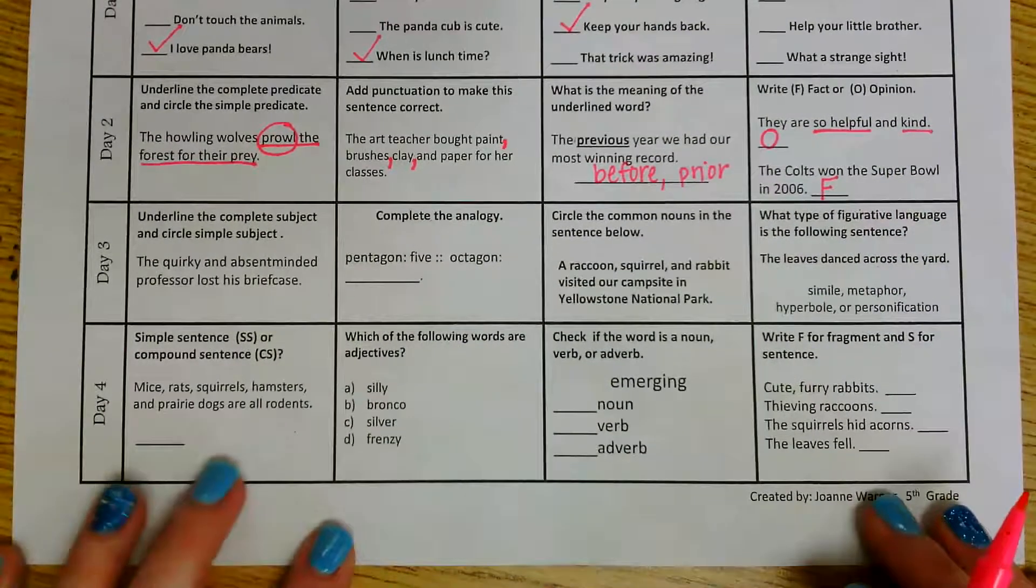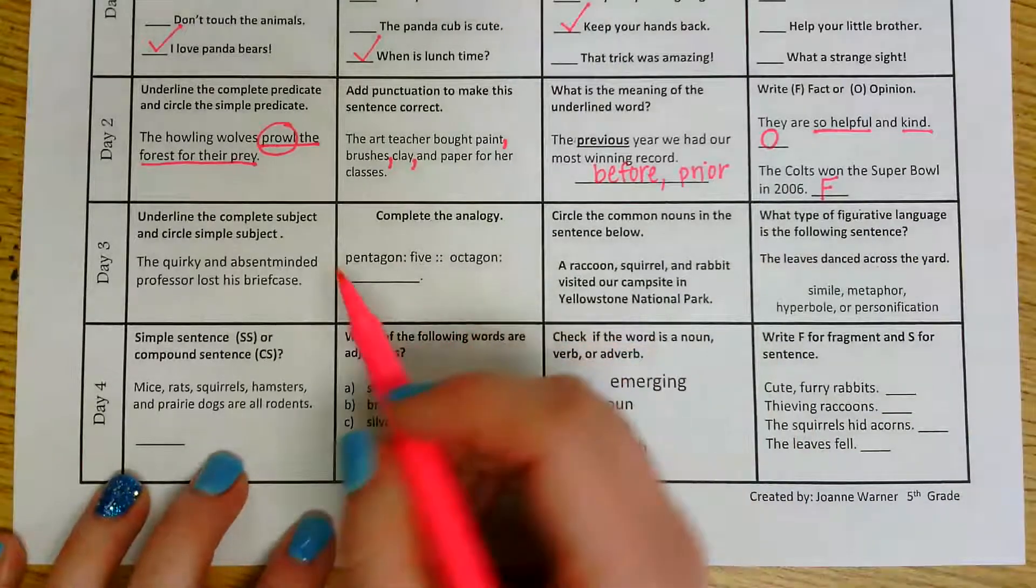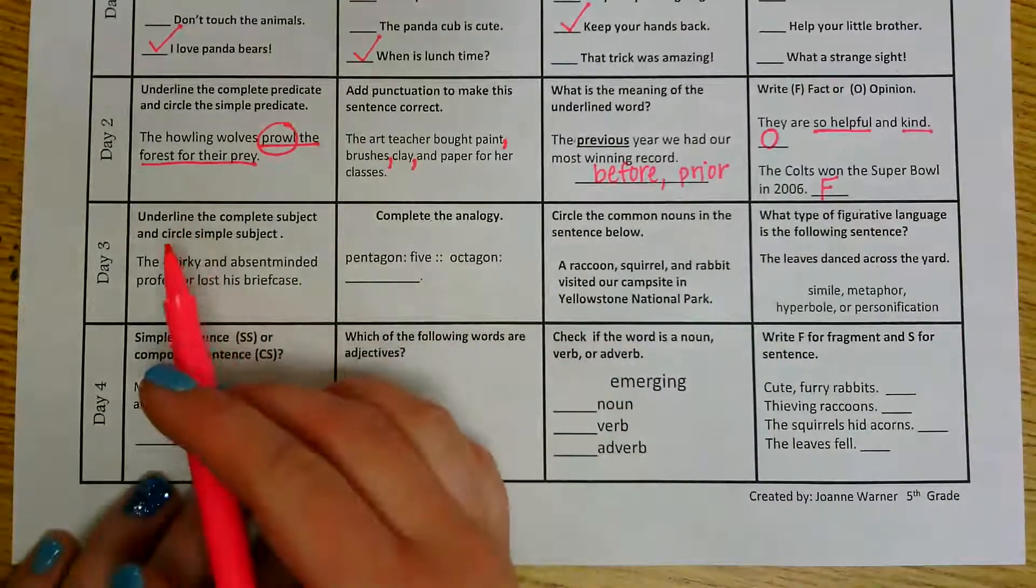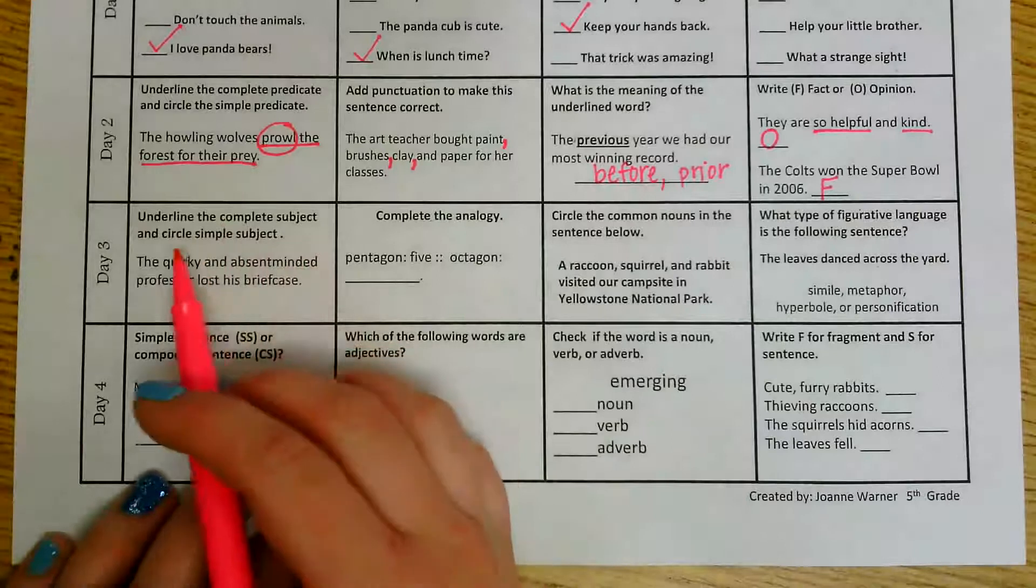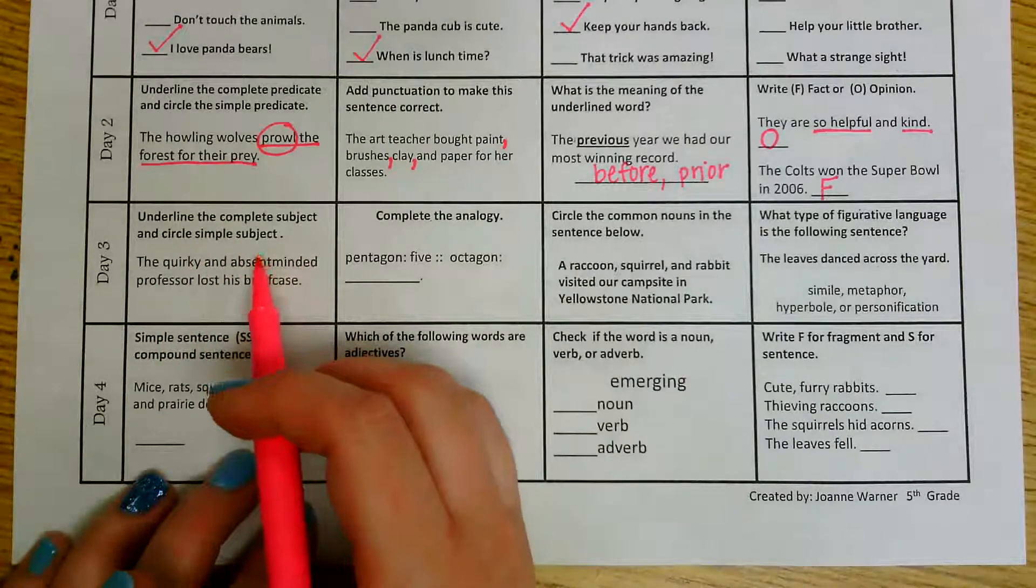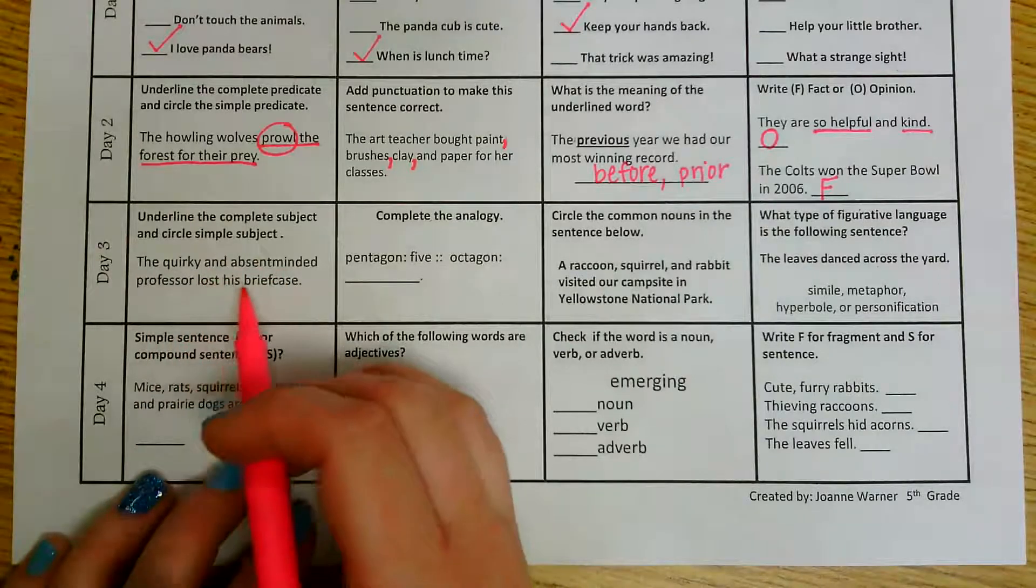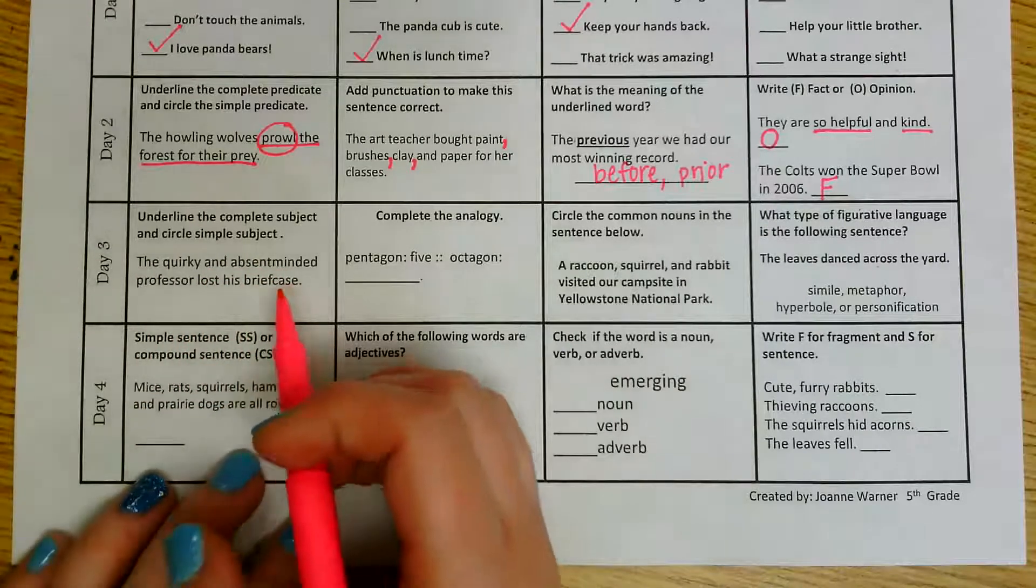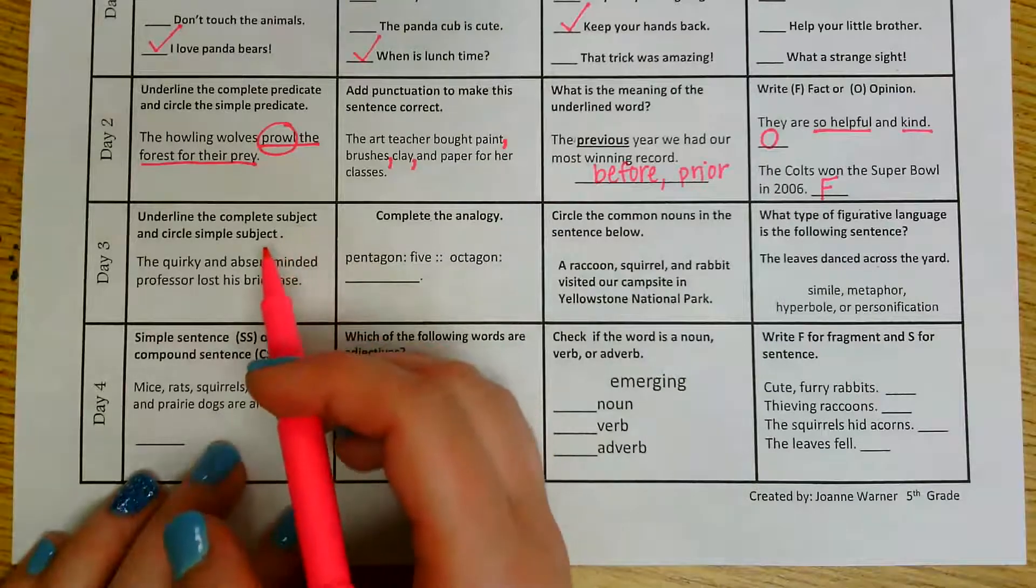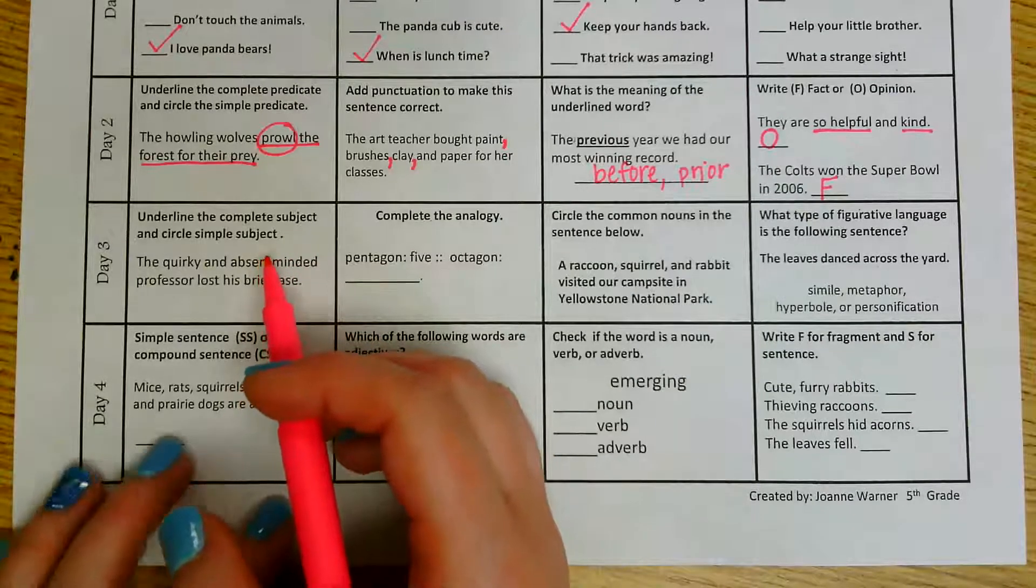All right, day three. This is what we should have done on Wednesday. The first one says underline the complete subject and circle the simple subject. Our sentence says the quirky and absent-minded professor lost his briefcase. All right, remember your subject is who or what the sentence is about.